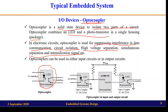For example, a microcontroller port pin should not be directly connected to an input circuit, so an optocoupler is placed between them. Similarly, a port pin should not be directly connected to an output circuit, so an optocoupler can be placed there as well. The optocoupler can be used for both input and output circuit isolation.